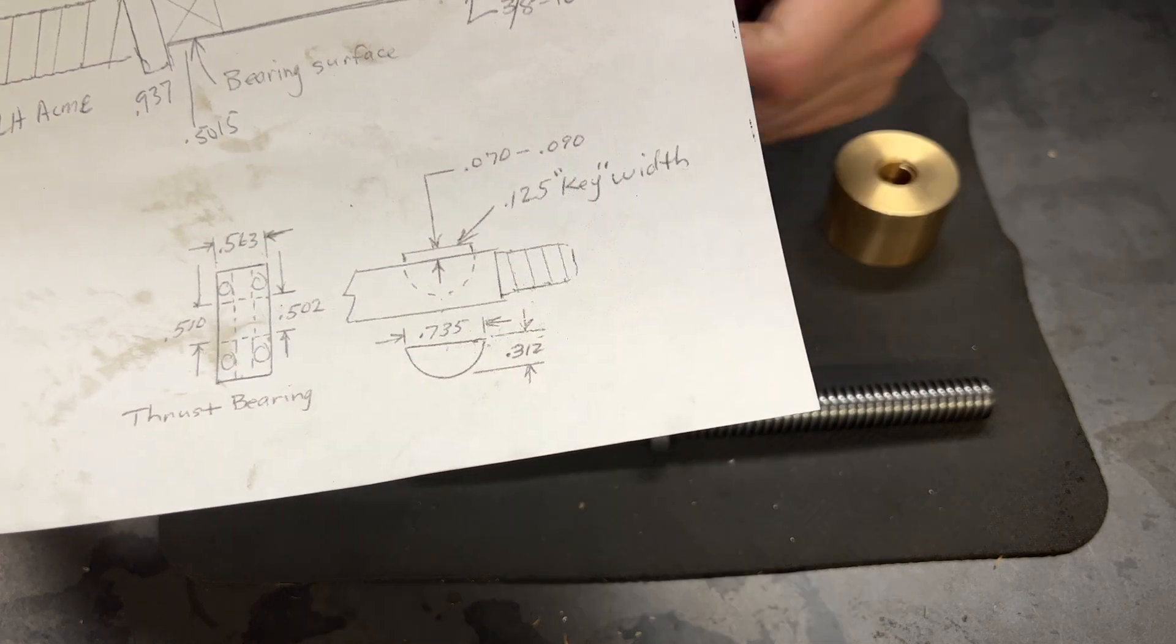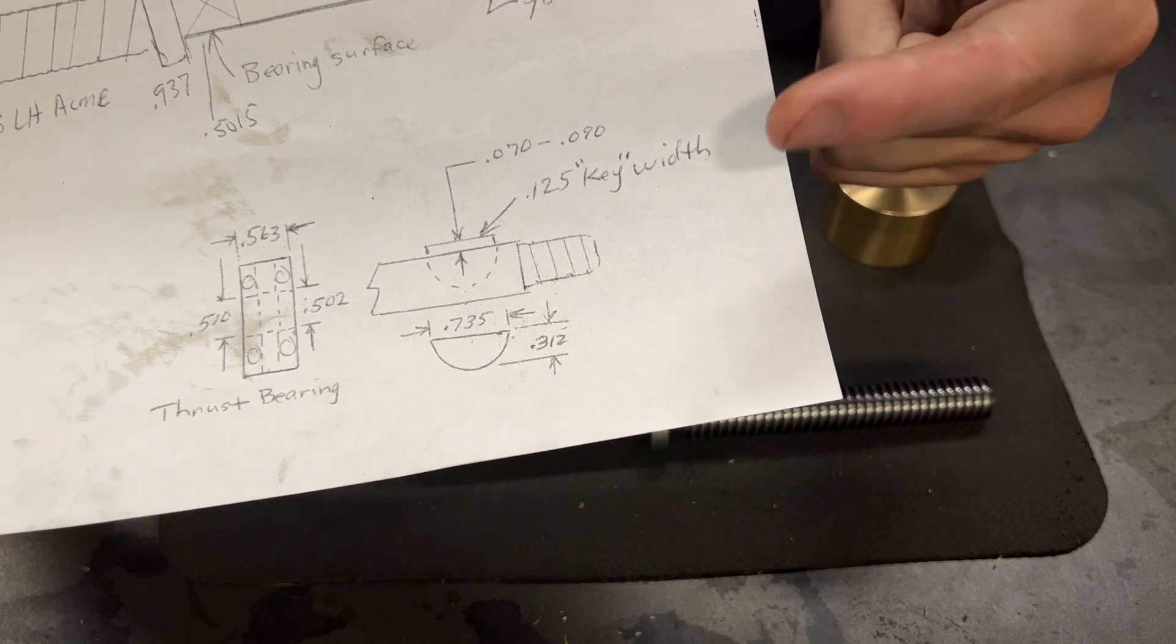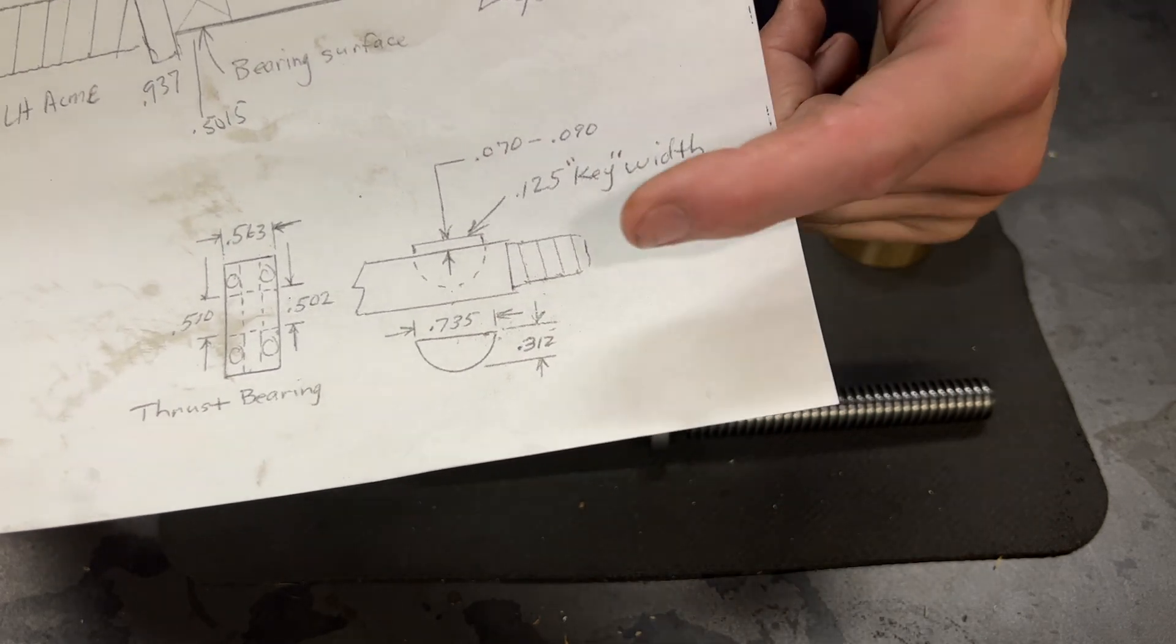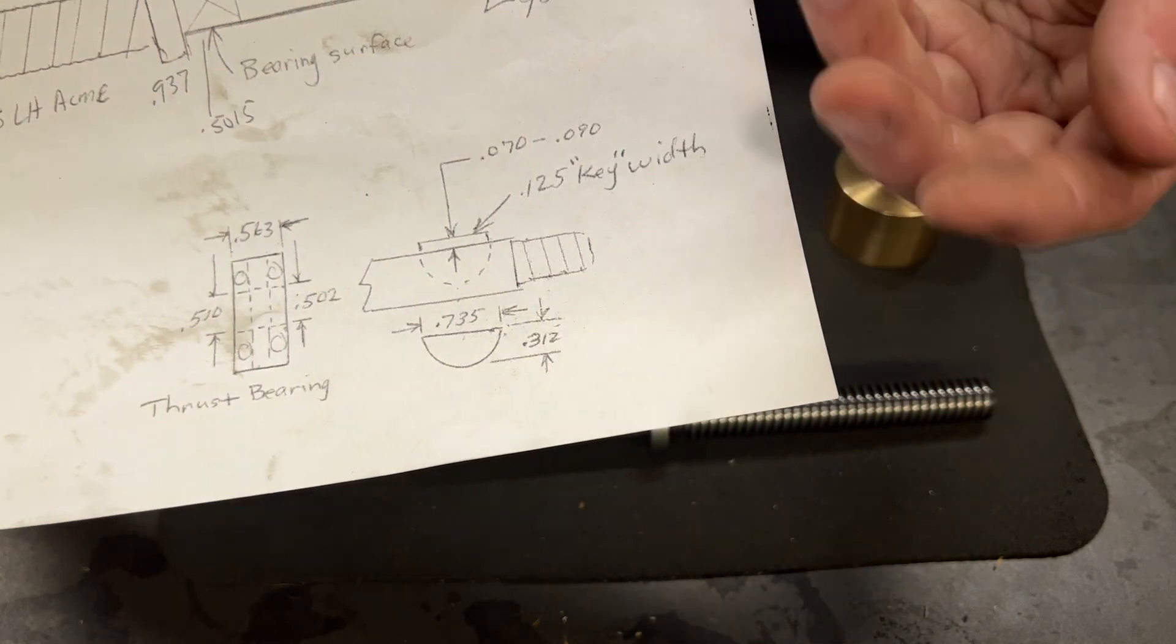The last thing we need to do is cut this key seat for a woodruff key. This is a key seat for a 1 1/8 inch woodruff key. These dimensions here are the dimensions that he took directly off of the existing part.